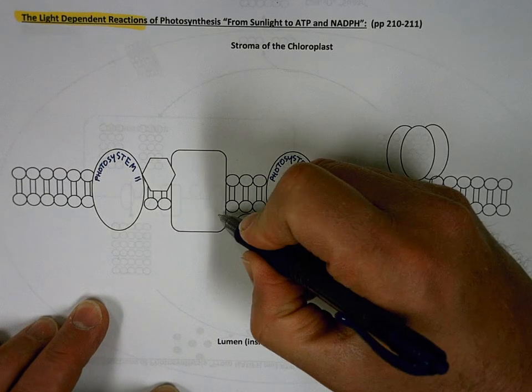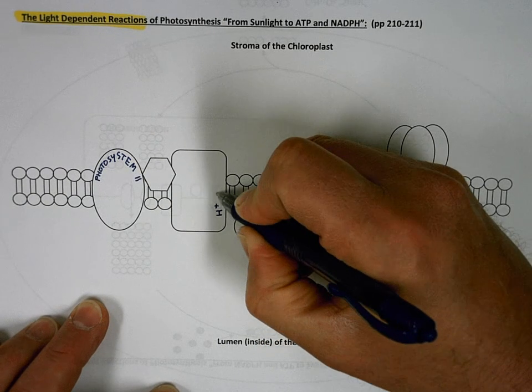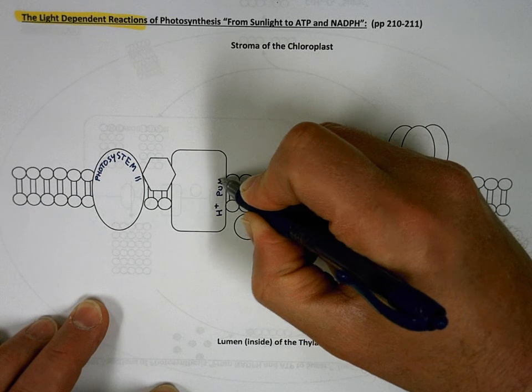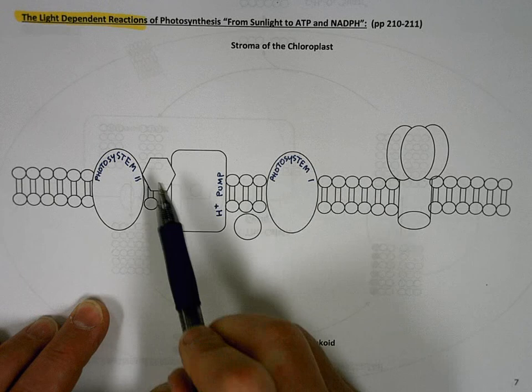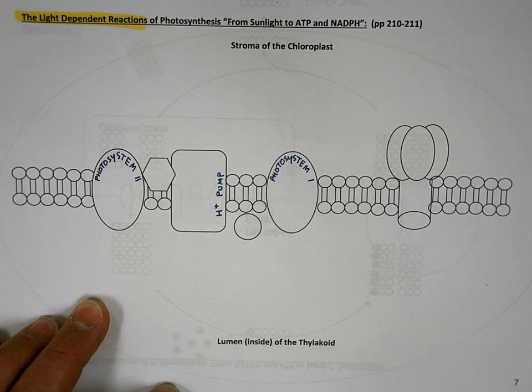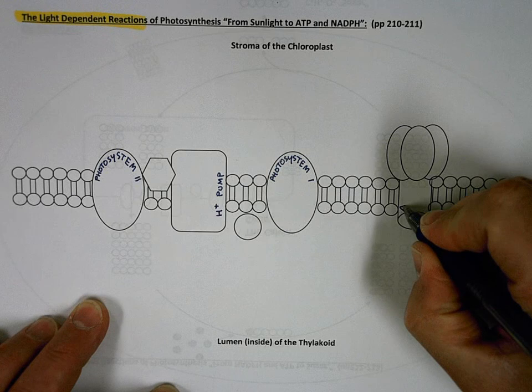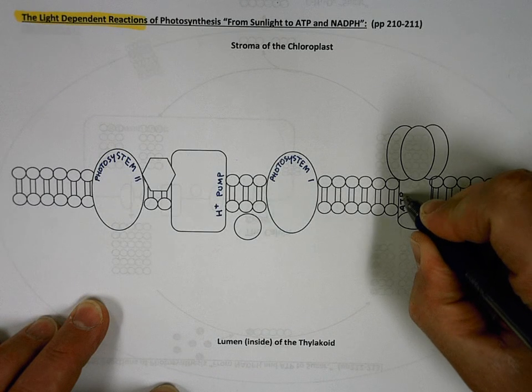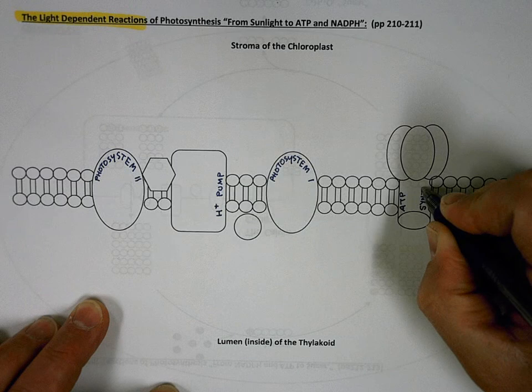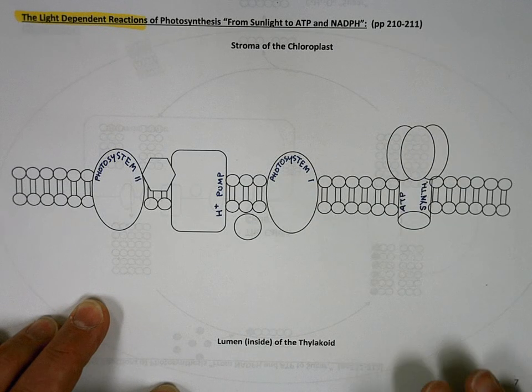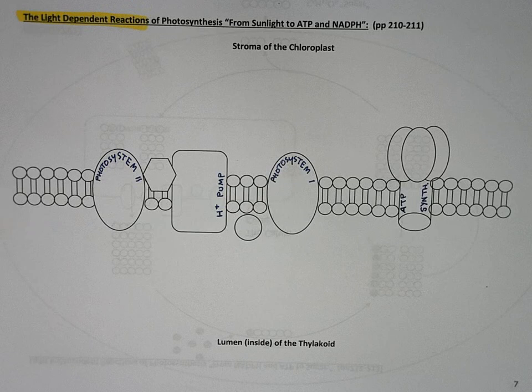This will be a hydrogen ion pump, which is a protein embedded in the thylakoid membrane. These two things are mobile carriers, which I'm going to ignore the name of right now. And of course this is ATP synthase. Hope you can see that.